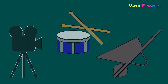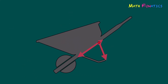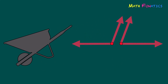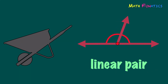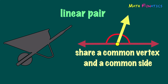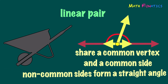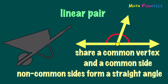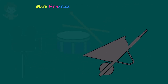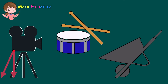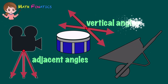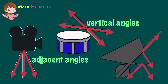The last illustration shows a wheelbarrow. We see that the angles are also placed side by side. These two angles are adjacent angles that form a linear pair. Notice that the angles forming a linear pair share a common vertex and a common side. In addition to that, their non-common sides form a straight angle.